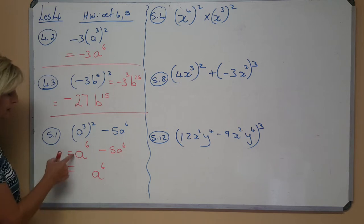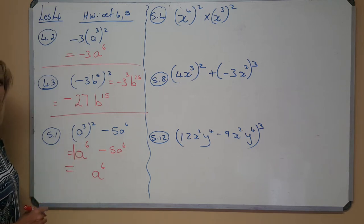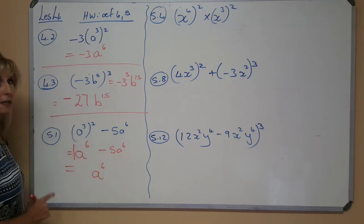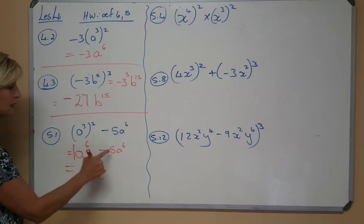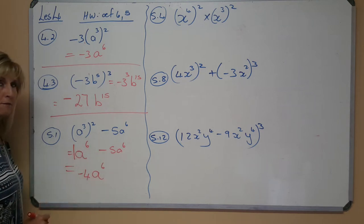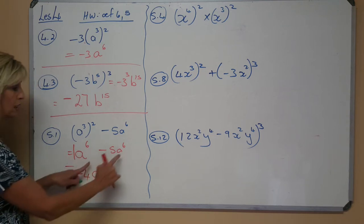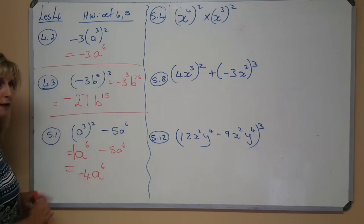And the terms, are they like terms? Yes, because the variables are exactly the same. So I can add and get an amount of 8 to the power 6. What amount? What stands here before the 8? If there is nothing there, there is a 1. So adding the coefficients, 1 minus 5 is minus 4. You keep the variable but you add the coefficients.